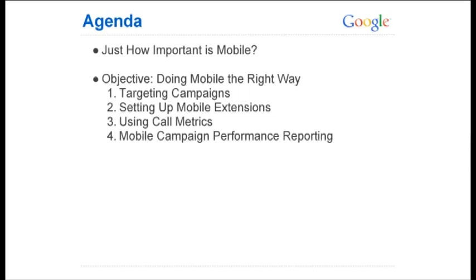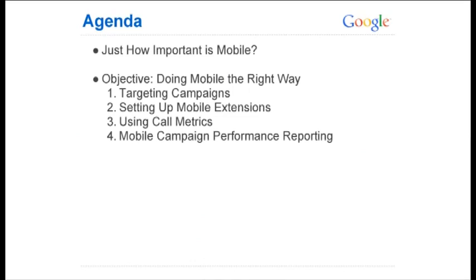So this is the agenda. The first item is just how important is mobile — we'll look at some trends. After covering how important it is, we'll look at how to set them up using the API. We'll look at targeting campaigns, setting up mobile extensions, using call metrics, which is a new feature introduced in the AdWords front-end and available to some degree through the API, and finally mobile campaign performance reporting using the new report service.